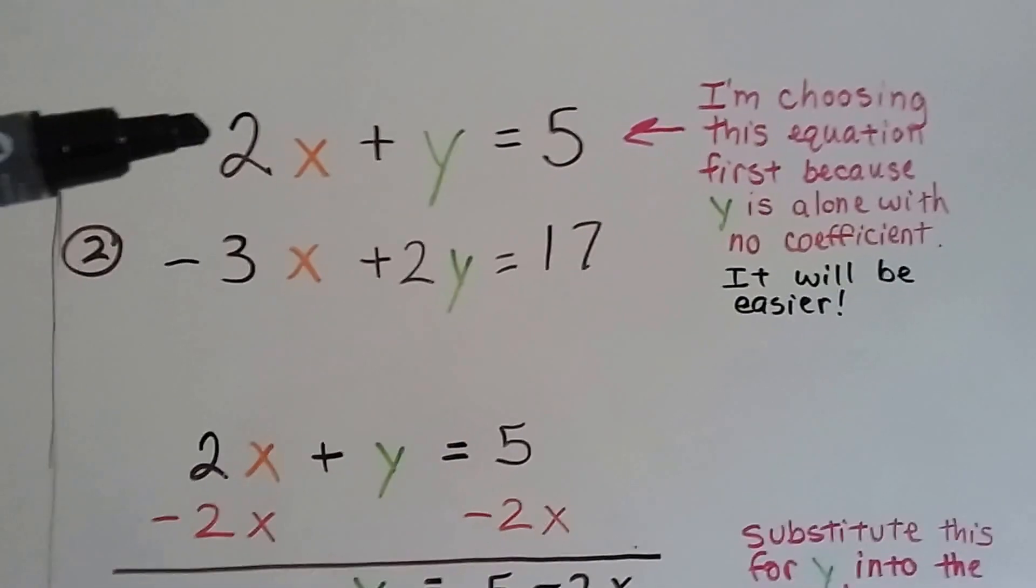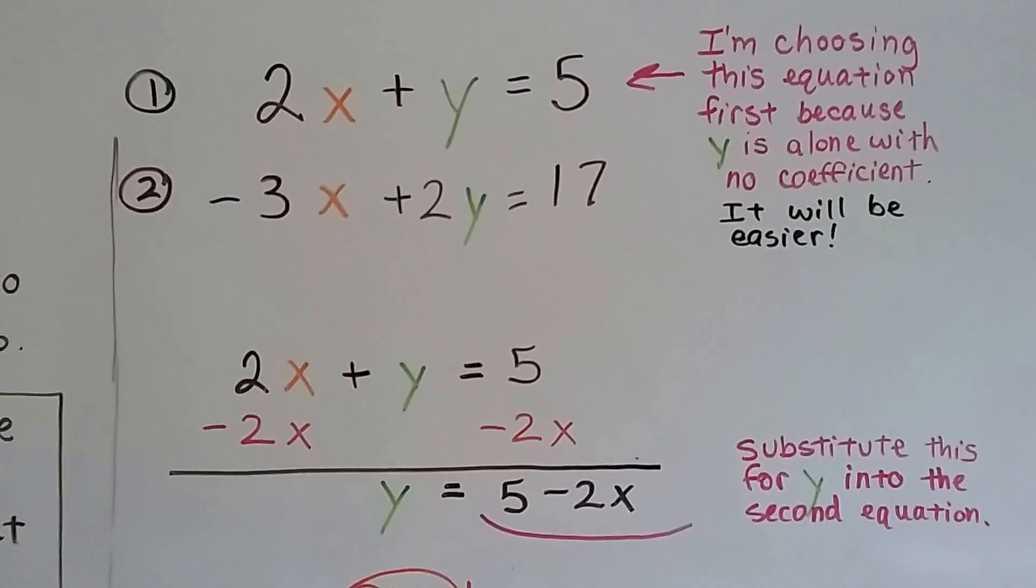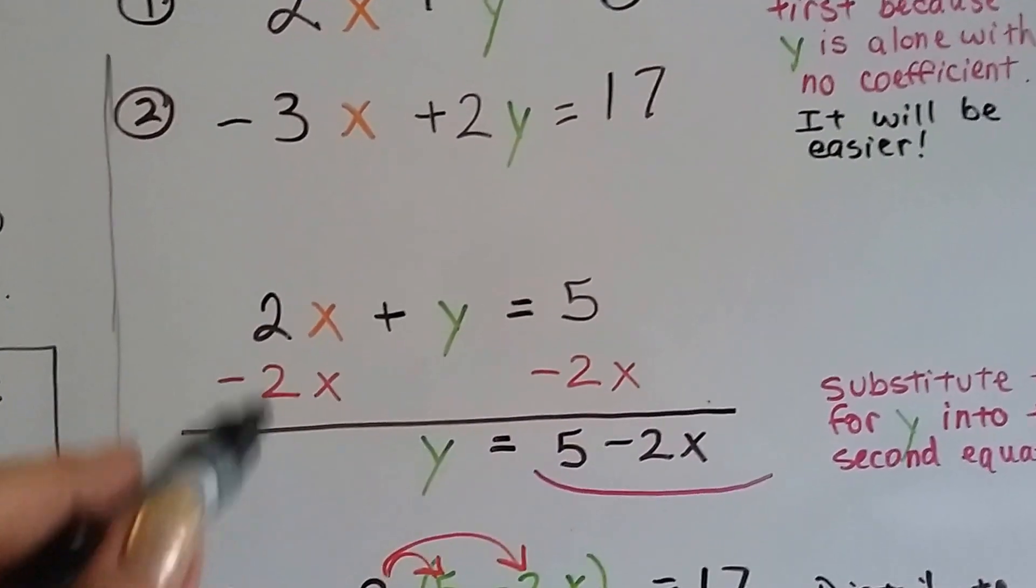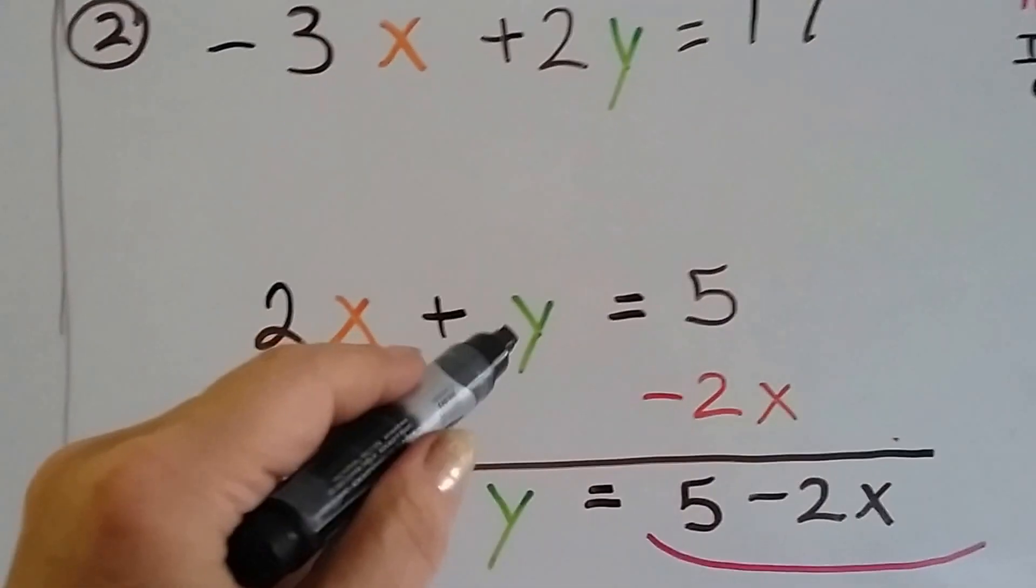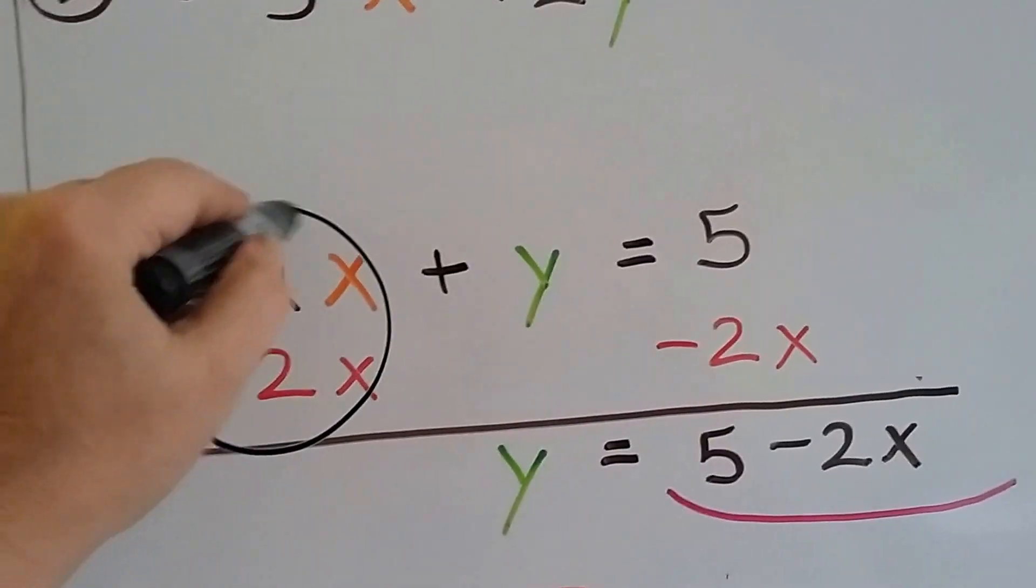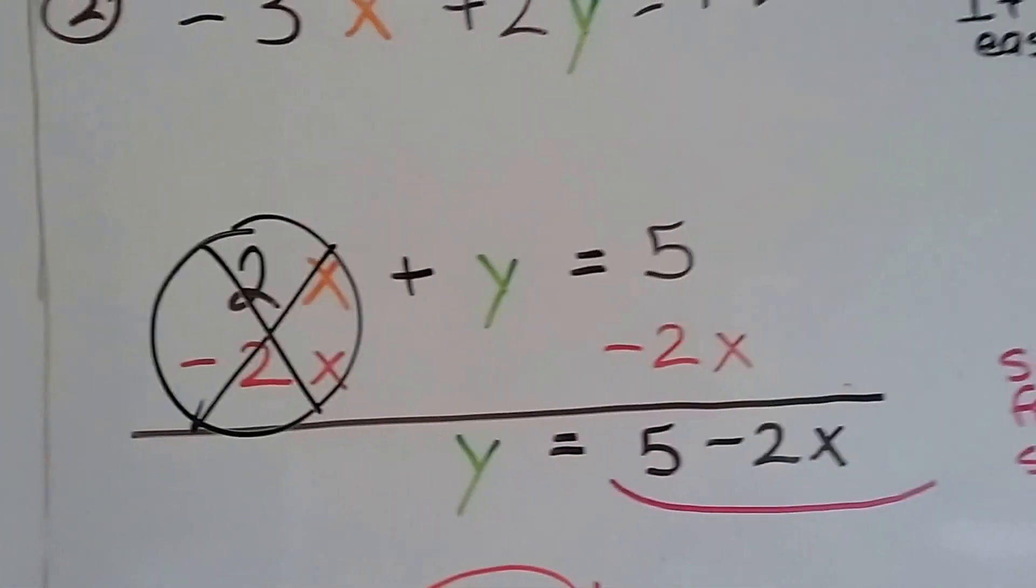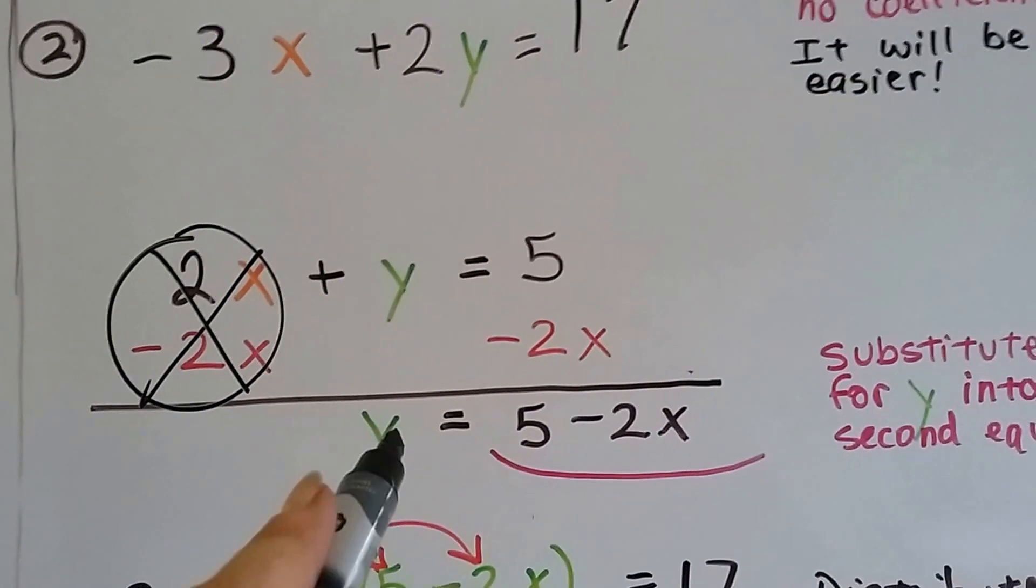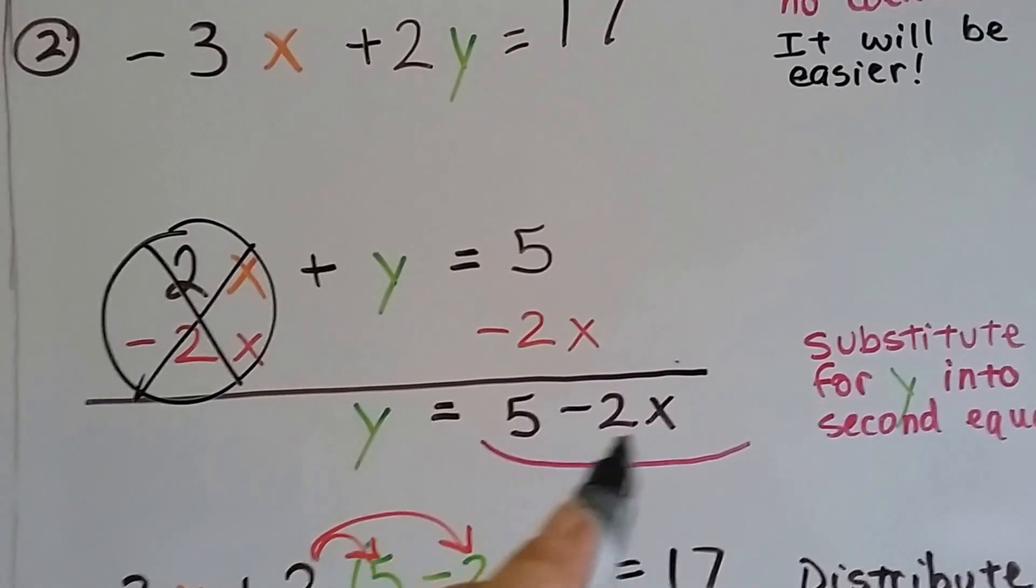So we've got 2x plus y equals 5. First thing we do is subtract 2x from each side of the equation so I can isolate this y, get it by itself. That makes that a zero pair, and then we put the minus 2x on this side. So now we've got y equals 5 minus 2x.